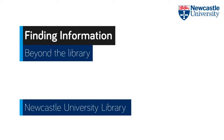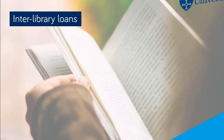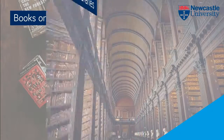If during your search within LibrarySearch and the databases we subscribe to here at Newcastle University, you find that we don't have access to a particular book, journal, article, conference paper or standard for example, don't give up, as we have ways and means of getting access to material we don't have. This video is going to tell you about the three different ways you can access information outwith Newcastle University: interlibrary loans, books on time, and other libraries.